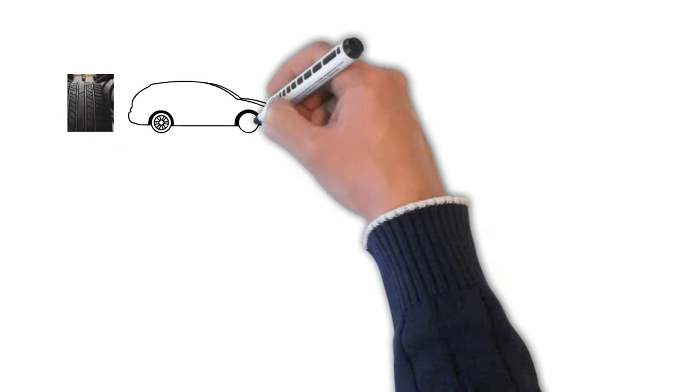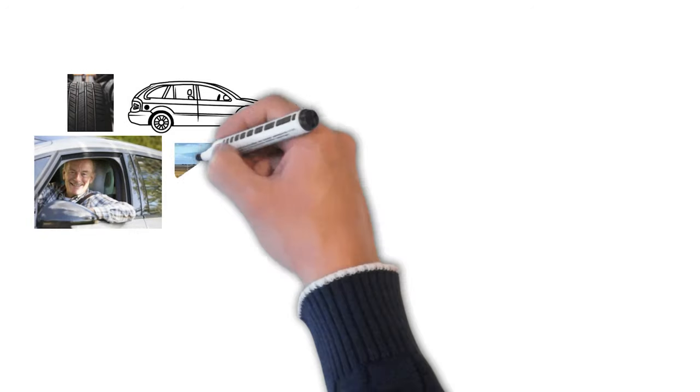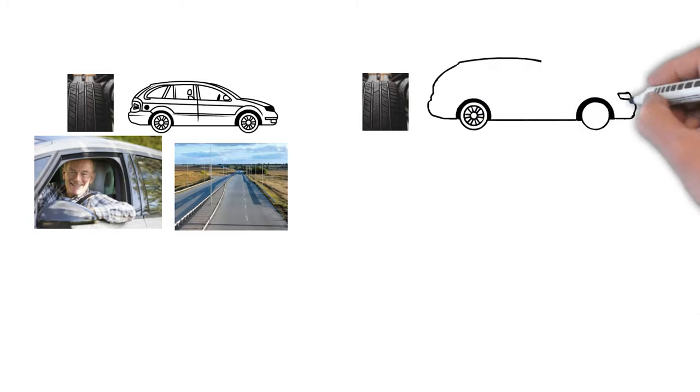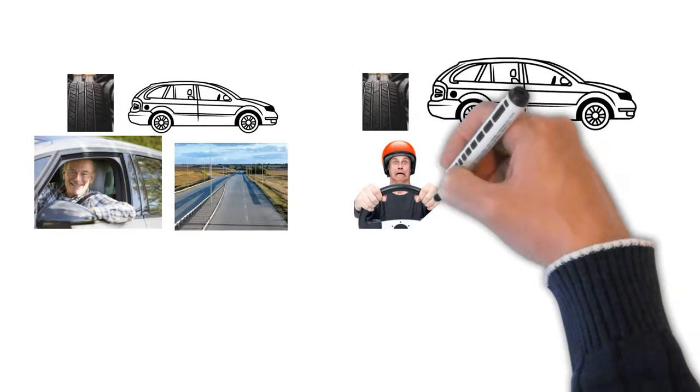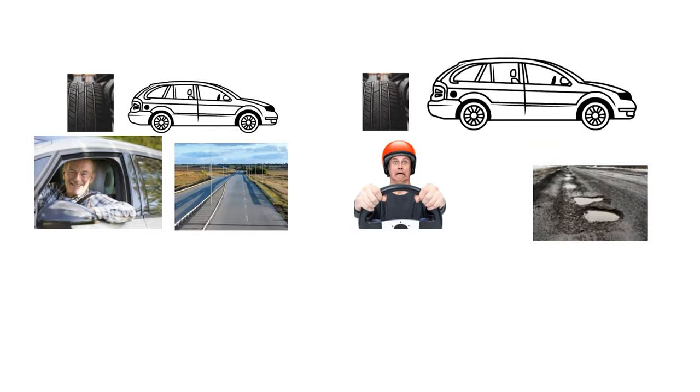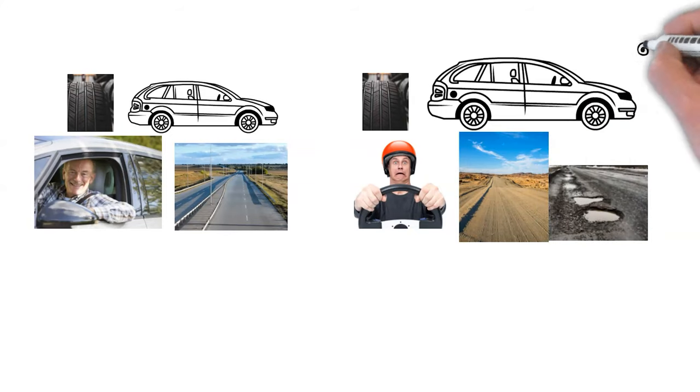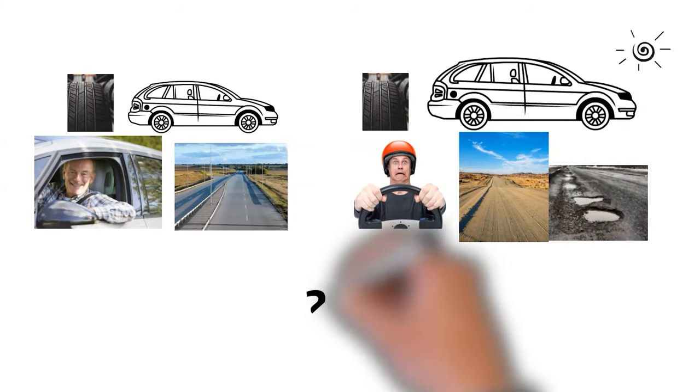In the first case, imagine using a set of tires on a small car being driven gently on a smooth and clean road under mild weather conditions. In the second case, using another set of tires on a much heavier car driven by someone with poor driving habits, frequent accelerations, sudden stops, and turns. This car navigates a road full of damage and debris, all under the burning desert heat. Which situation do you think would result in quicker wear and tear of the tires?